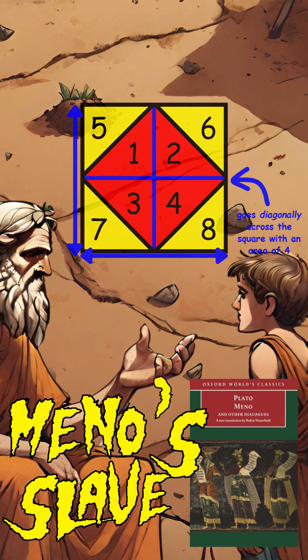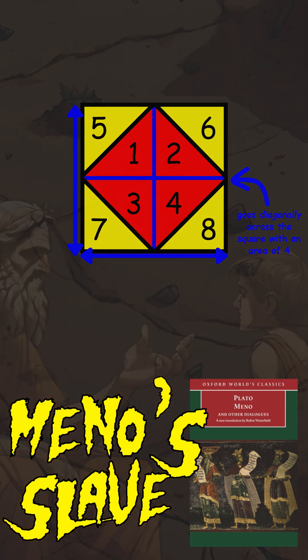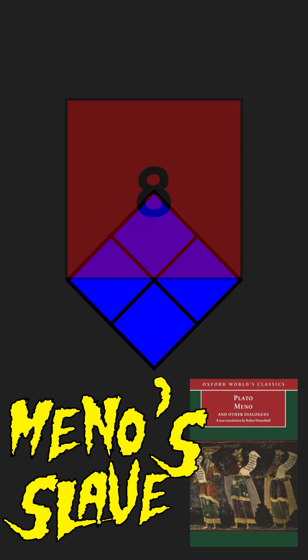So this is the point: the sides of the square with an area of eight were equal to the diagonal line of the original square with an area of four. The general principle is that a square with an area of 2a will have sides equal to the diagonal of a square with an area of 1a.